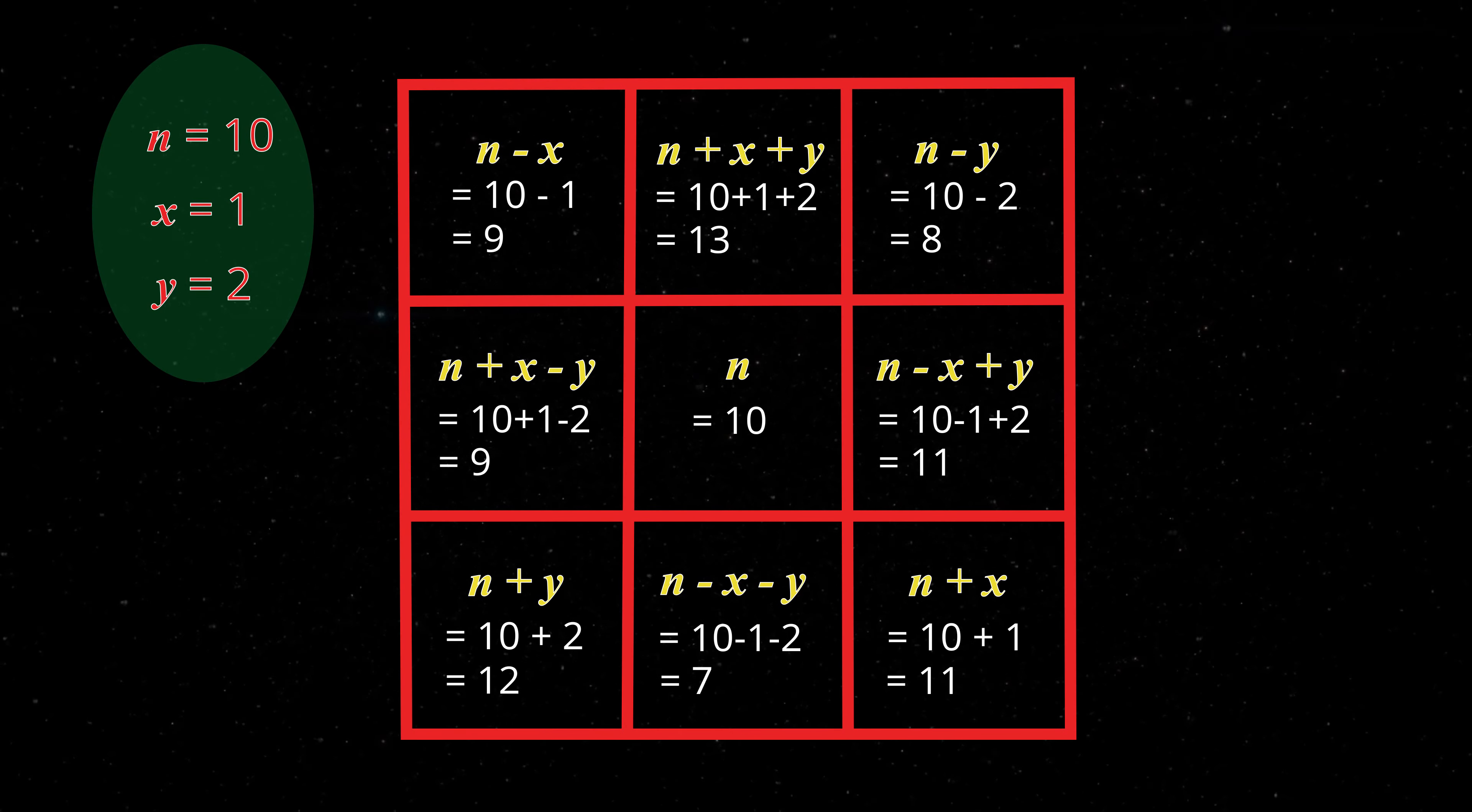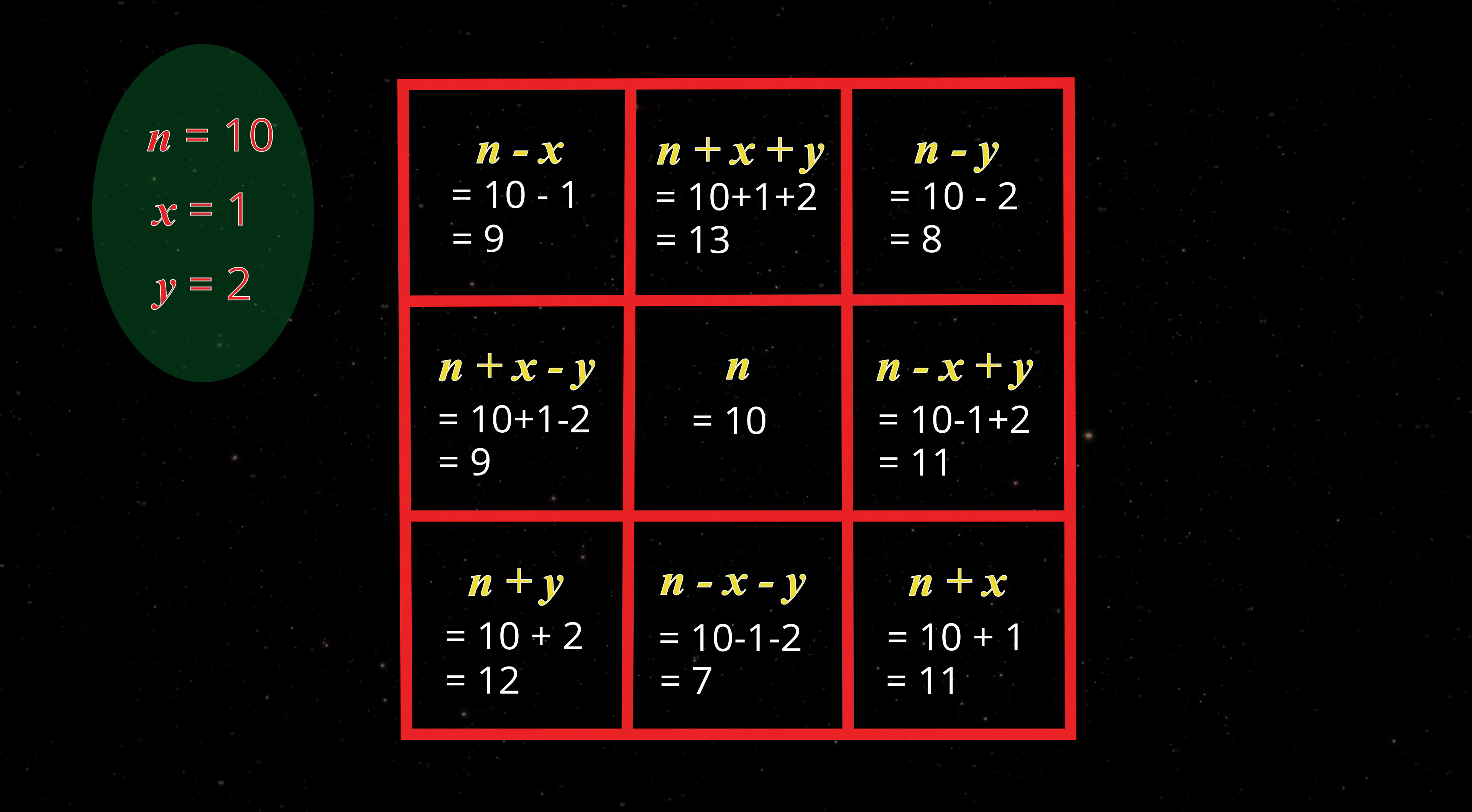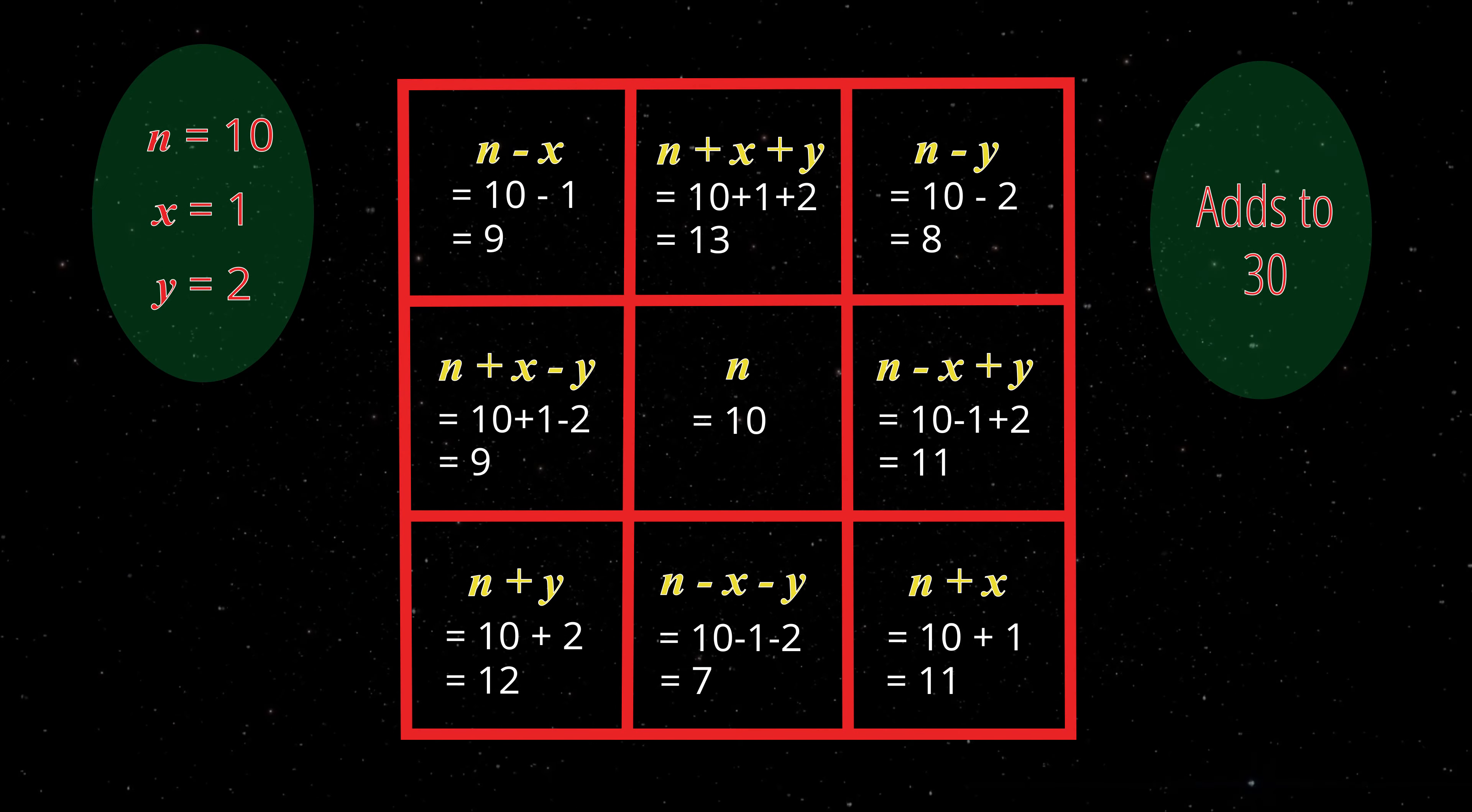Now let's check that each row, each column, and each diagonal add to the same number. That's great. In this magic square, they all add to 30.